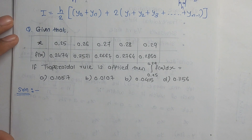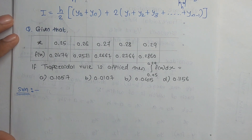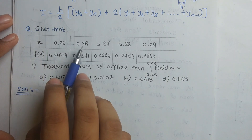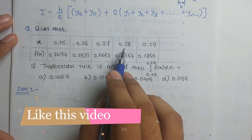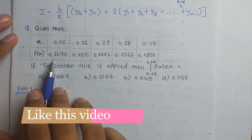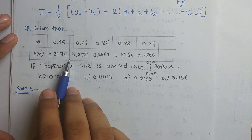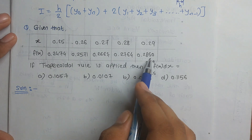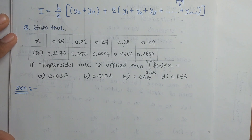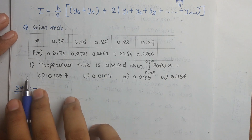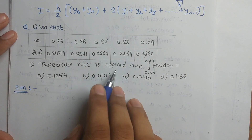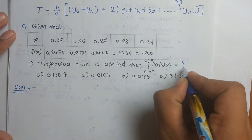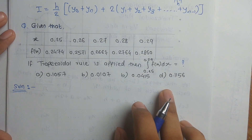The first example gives a table of x and f(x) values. x values are 0.25, 0.26, 0.27, 0.28, and 0.29, with corresponding f(x) values of 0.2474, 0.2571, 0.2667, 0.2764, and 0.2860. We are asked to find the integral from 0.25 to 0.29 of f(x) dx using the trapezoidal rule, with multiple choice options given.